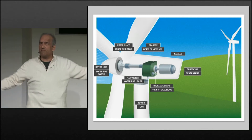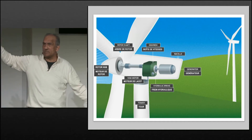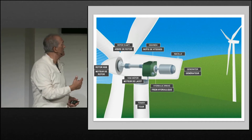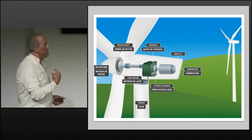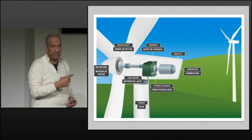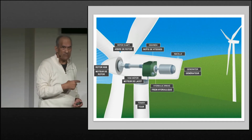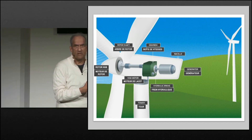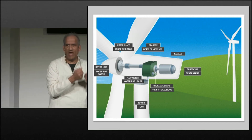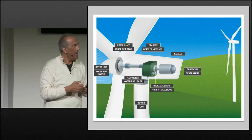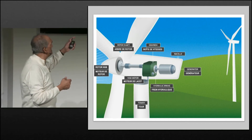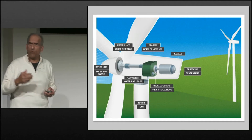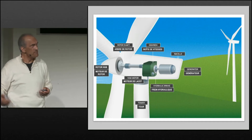Those big blades don't have to turn that fast because there's a lot of power in them. As they turn, they create magnetism, and magnetism creates the power of energy — that's what really drives it. Those little pieces connected there create power.